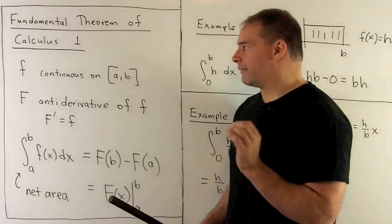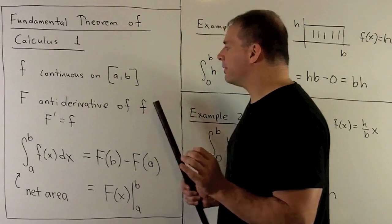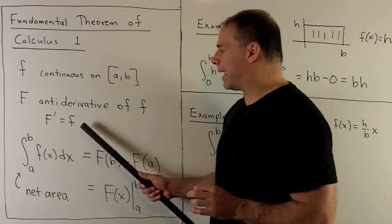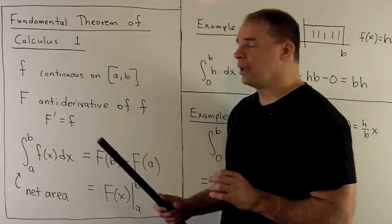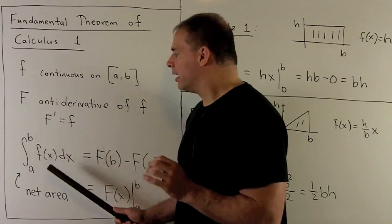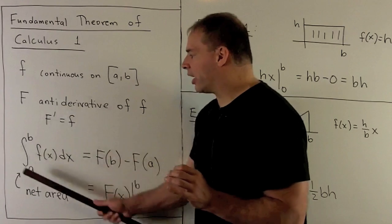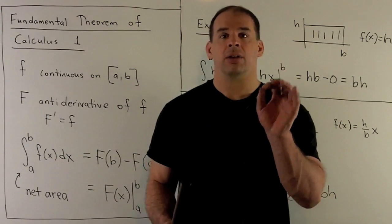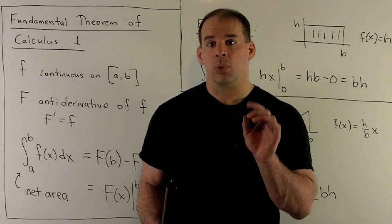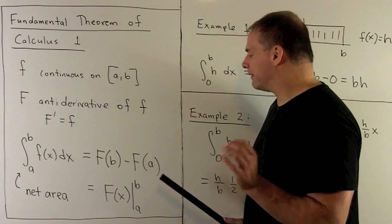What does it state? We have a function f continuous on a closed interval [a, b]. We'll have an antiderivative of f, we'll call it capital F — that just means if I take the derivative of capital F, we get back little f. The conclusion is: if we take the definite integral from a to b of little f with respect to x, giving us the net area between the graph of the function and the x-axis from a to b.